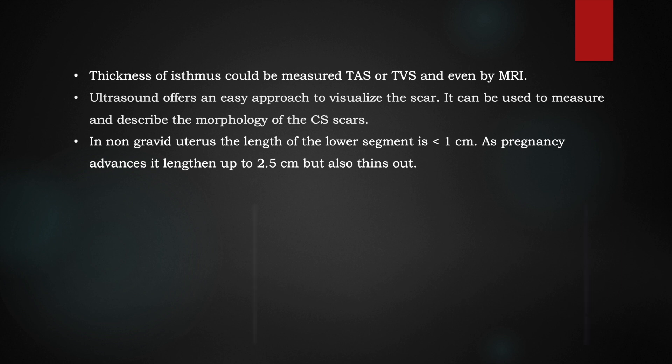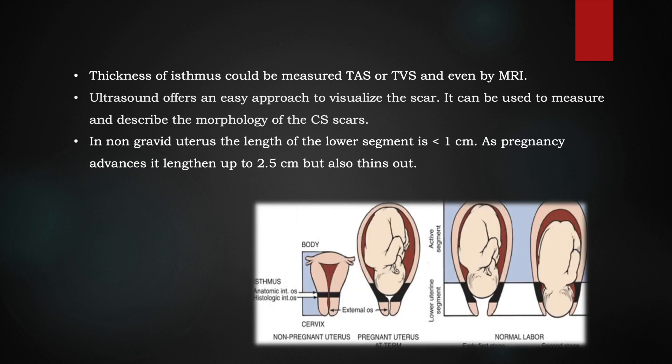This is a diagrammatic representation showing that in the non-gravid uterus, the lower segment is thick and small, but as the pregnancy continues, it elongates and also thins out. The same happens during delivery — it further thins out.